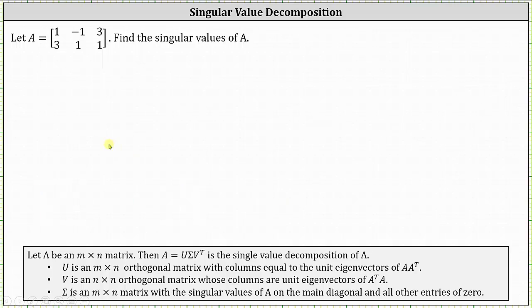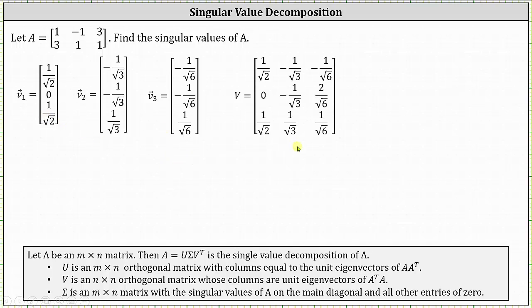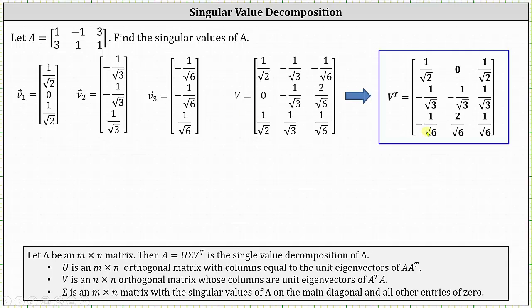Now that we have vectors V sub one, V sub two, and V sub three, we can form matrix V, where these vectors form the columns. For the singular value decomposition we need V transpose — making the rows of matrix V the columns of V transpose — and we now have matrix V transpose.